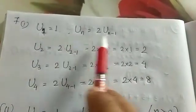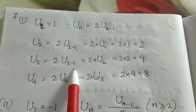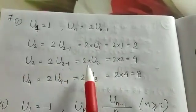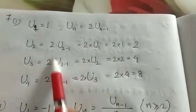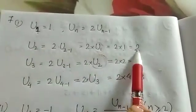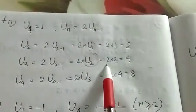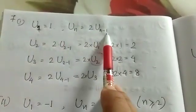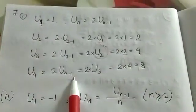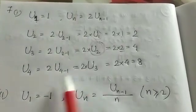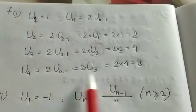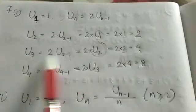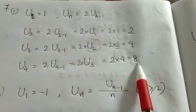Similarly, putting n equals 3: U(3) = 3 times U(3 minus 1) = 3 times U(2). U(2) is 2, so U(3) = 3 times 2 = 6. Then putting n equals 4: U(4) = 4 times U(4 minus 1) = 4 times U(3) = 4 times 6 = 24.